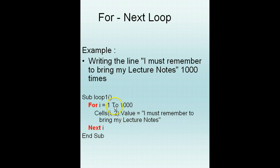In the next iteration, i will be equal to 2, so cell(2, 2).value = 'I must remember to bring my lecture notes'. Then i will be equal to 3, cell(3, 2).value = 'I must remember to bring my lecture notes'. So it goes row by row in the second column.